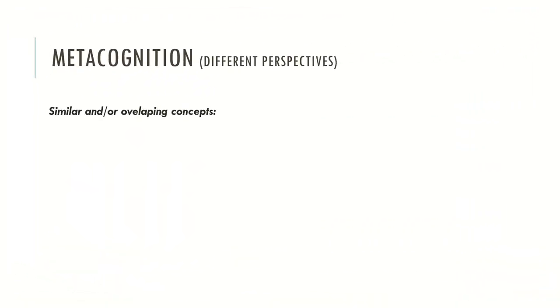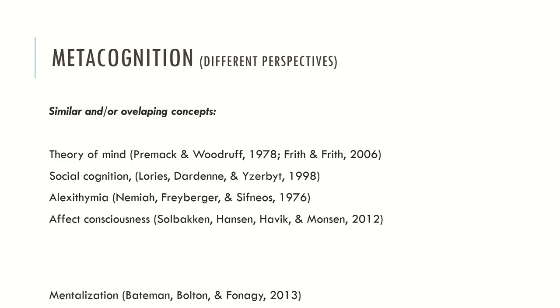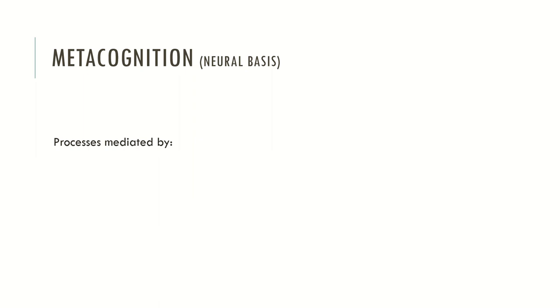As with some constructs in psychology, there are many overlapping concepts that may be related or similar to metacognition. One is called theory of mind. One is called social cognition. One is called alexithymia, which may be viewed as a deficit or difficulty in awareness about inner and external emotional states. Affect consciousness, which may be related to alexithymia. Mentalization, which is a process very similar to metacognition. And also, we can look at metacognition from a neuroscience perspective — metacognition has some identified neuronal basis.